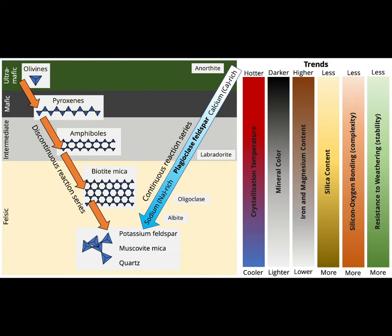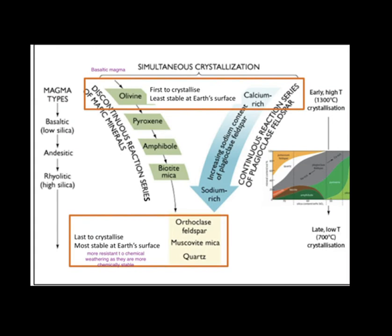In the discontinuous reaction series, we have minerals in the order of olivine, followed by pyroxene, then amphibole, and then biotite. When the temperature of the magma drops, minerals are formed in this sequence. At approximately 1400°C, first olivine is formed, then pyroxene, amphibole, and biotite.